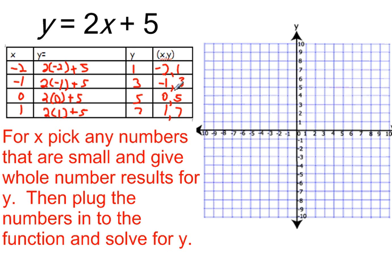Now I have four ordered pairs, and I'm going to graph those over here. So negative 2, I do my x first, so negative 2 and then up 1, and then put my point. Then it's going to be negative 1, 3, 0, 5, and 1, 7. I've made my points.